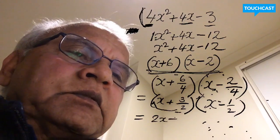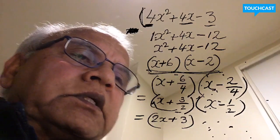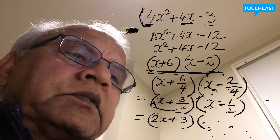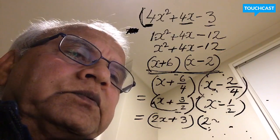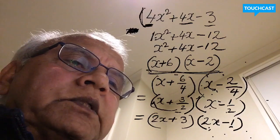That 2 comes in front of x, giving you 2x - 1. All done.